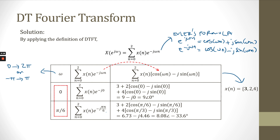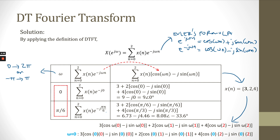The values correspond to n equal to 0, n equal to 1, and n equal to 2. We set the omega value starting from 0 and increase by π/6 until we reach omega equal to 2π. From the equation, we compute Xn multiplied with cos(ωn) − j·sin(ωn). The first calculation is for omega equal to 0.